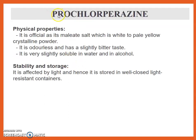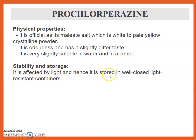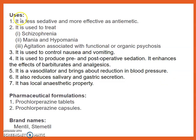Next drug is Prochlorpromazine. Physical property: it is official as its maleate salt, which is a white to pale yellowish, odorless powder with a slightly bitter taste. It is very slightly soluble in water and in alcohol. Stability and storage: it is affected by light, and is stored in well-closed, light-resistant containers.